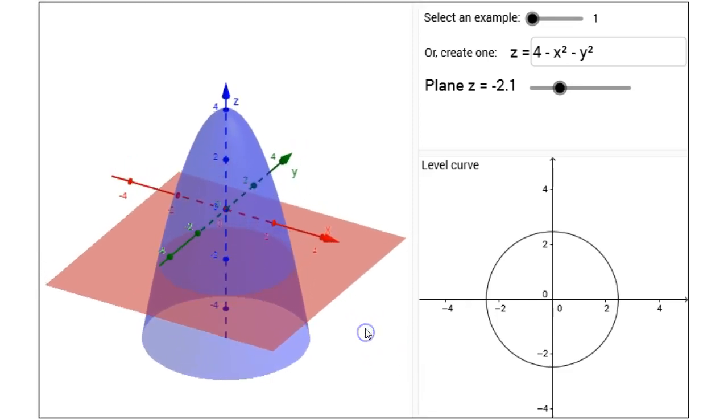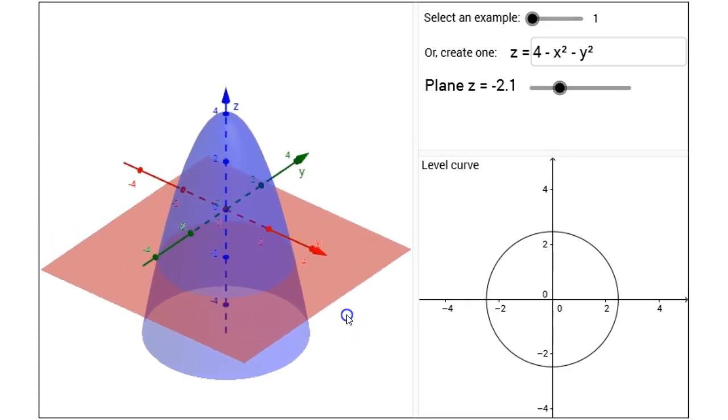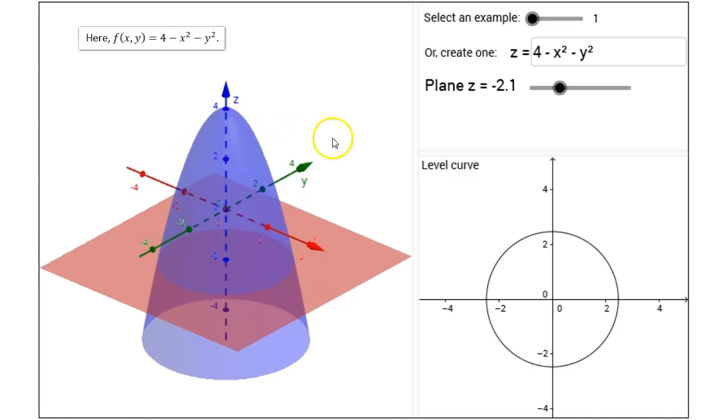When the figure opens, a three-dimensional graph is given to us on the left. You can click and drag the background to get a different view of the picture. And there's the graph of a function in blue.